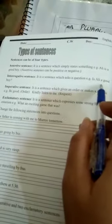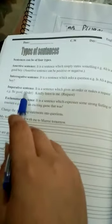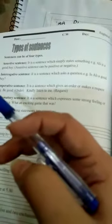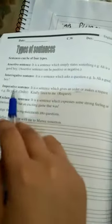Imperative sentence: It is a sentence which gives an order or makes a request. For example: Kindly listen to me. These are orders and requests. This is imperative sentences.